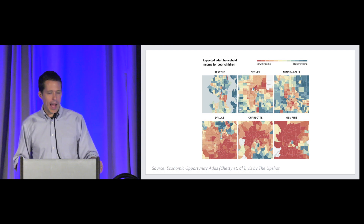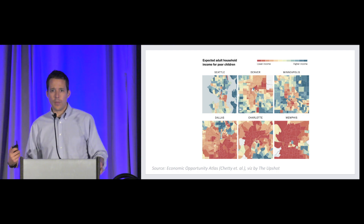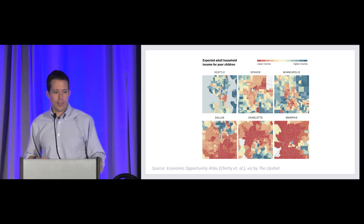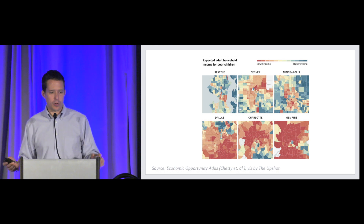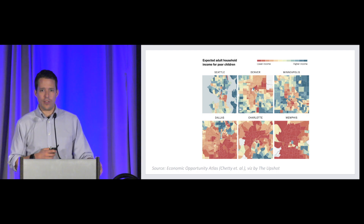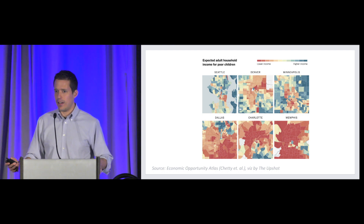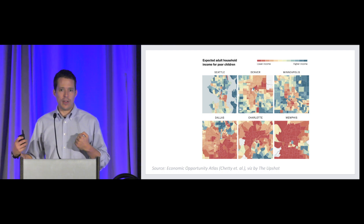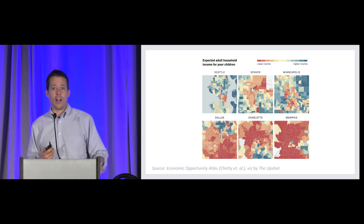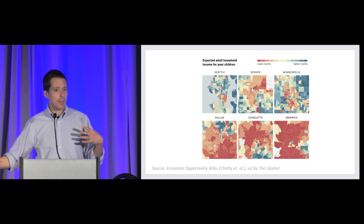One example is the Opportunity Atlas released last October by Raj Chetty in the Economic Opportunity Project. They took census data to understand social mobility — what's the probability that someone living in an area will earn more than their parents? Working with the census, they've now released this atlas at a census block scale, showing areas with higher or lower social mobility. You can see, for example, what social mobility looks like in Seattle versus Memphis. This is a great example of how improved government data allows us to answer important social science questions, and there's a democratization of data where one researcher packages it up and many papers can follow.